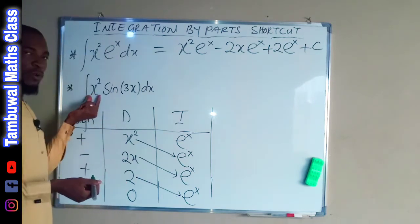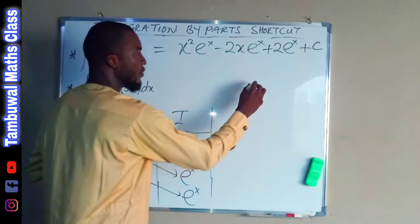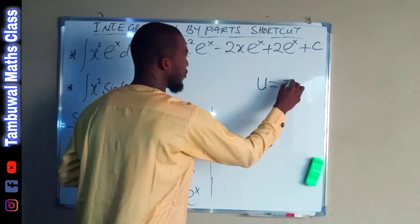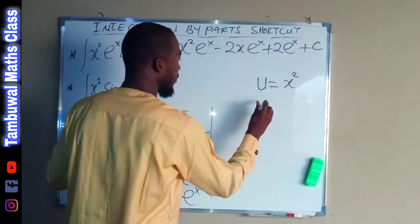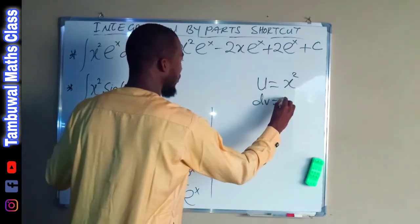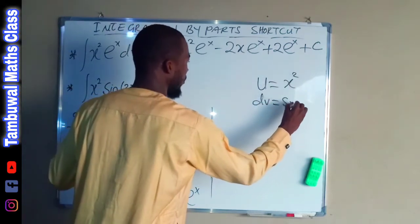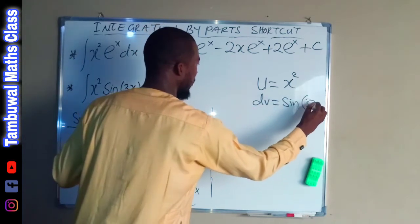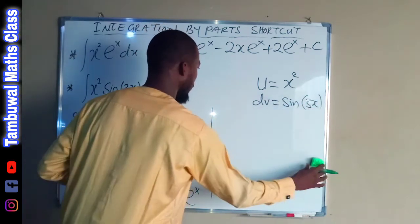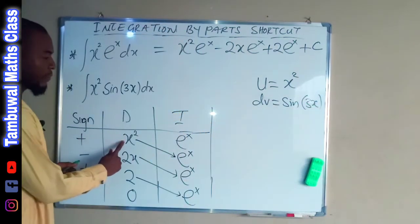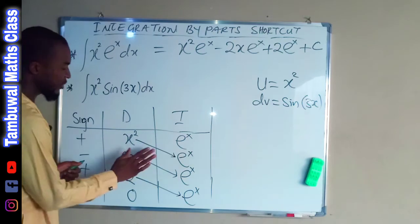Now let's look at the second problem. To decide which is u, the algebraic function comes first, so we set u equal to x squared and dv equal to sine of 3x dx. The differentiation column remains the same, so we only need to change the integration column.